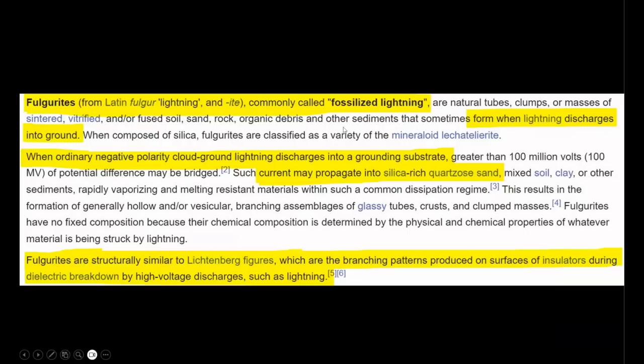Here is the area where the sample was taken and a close up of that material. Now, for those of you that are not familiar, fulgurite is otherwise known as fossilized lightning. And I will quote here some important details about fulgurite that will be relevant as we proceed. Fulgurites are commonly called fossilized lightning. And they form when lightning discharges into the ground. When ordinary negative polarity cloud to ground lightning discharges into the ground, current may propagate into silica rich quartzose sand, producing these fulgurite formations that include microspherules of silica.